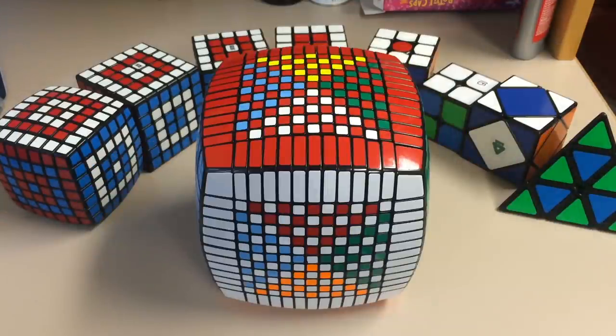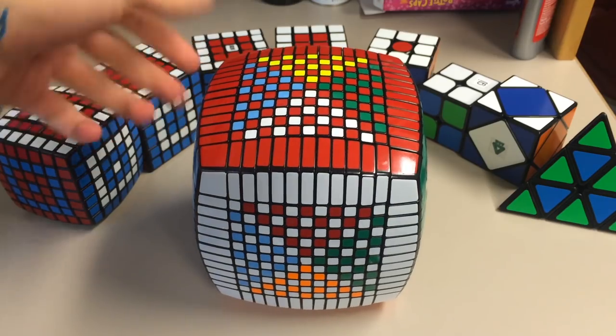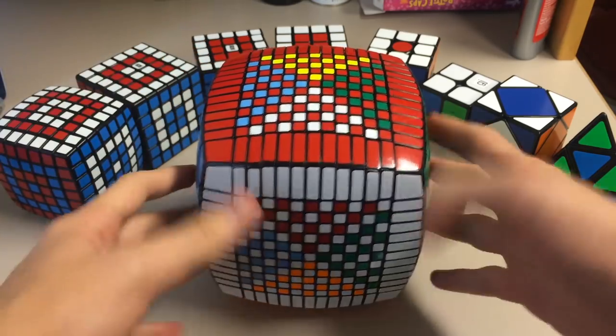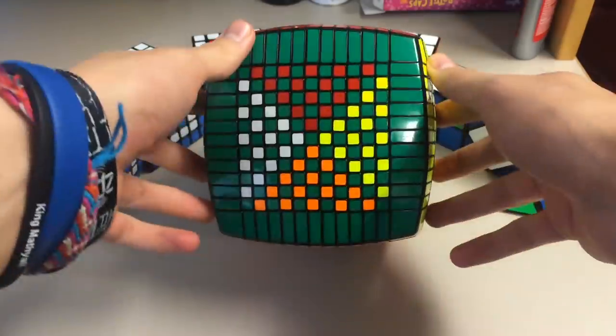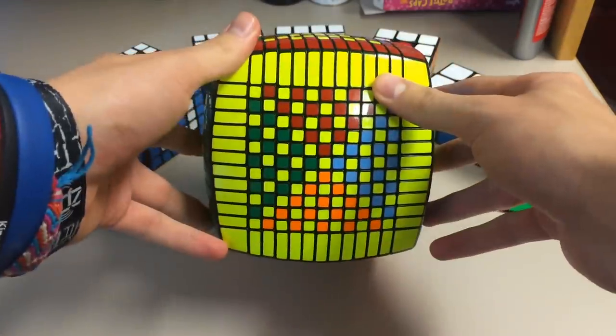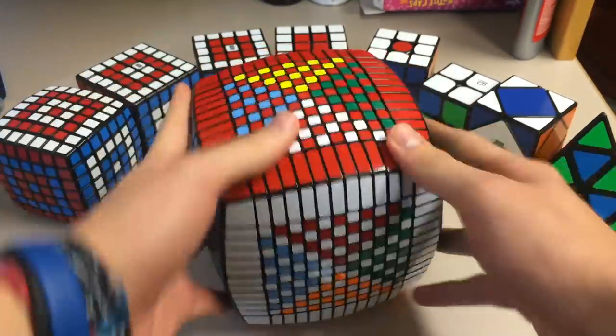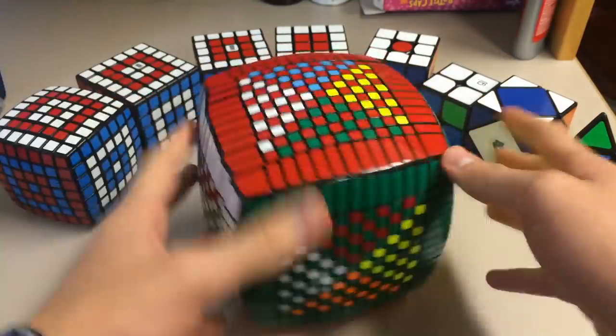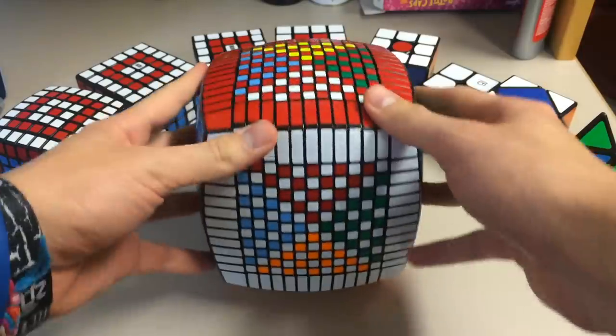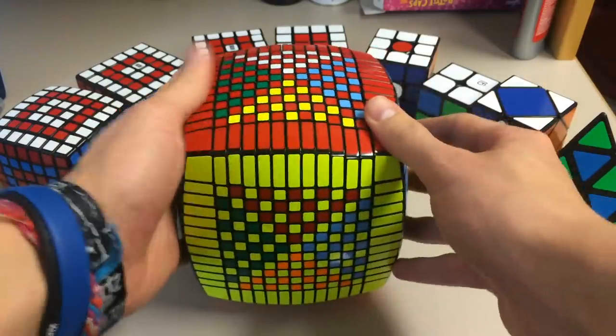Alright, so that didn't take as long as I thought it would. Because I just decided to re-solve the edges rather than flip each one multiple times. So this is what it looks like when just the centers are super flipped. I had to solve it like a picture cube basically and orient the centers. But there it is. It looks really cool. Anyways, there is the last pattern for this video.